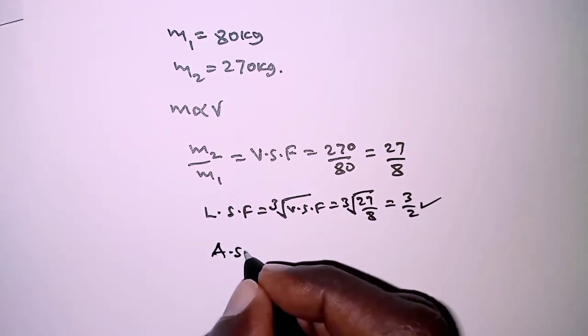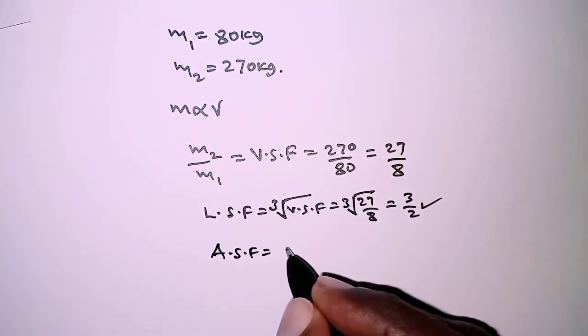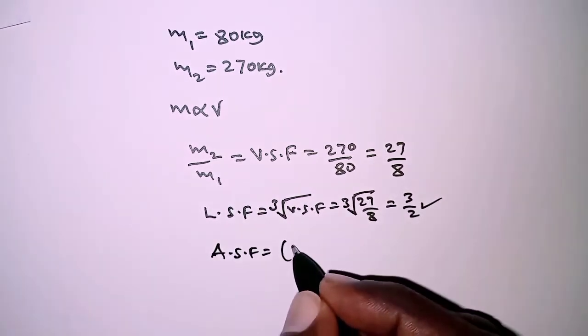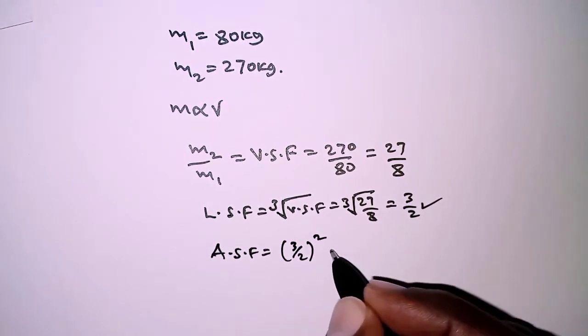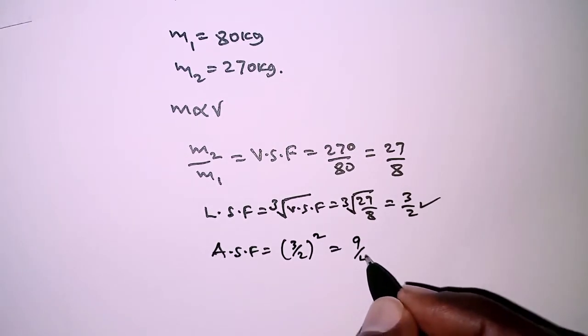From this we can now get the area scale factor, which is linear scale factor squared, and that is 9 over 4.